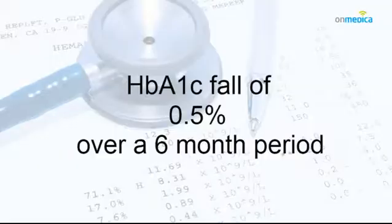The stopping rules for gliptins and pioglitazone are less rigid than for the GLP-1 injectables, in that the HbA1c fall required is 0.5% over six months and there are no caveats regarding weight.